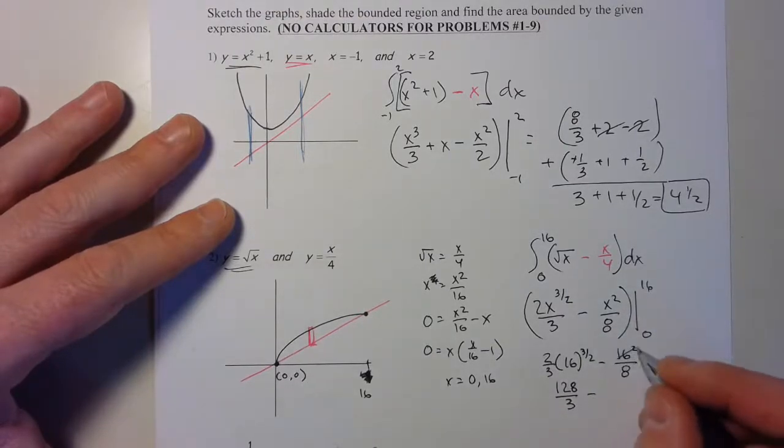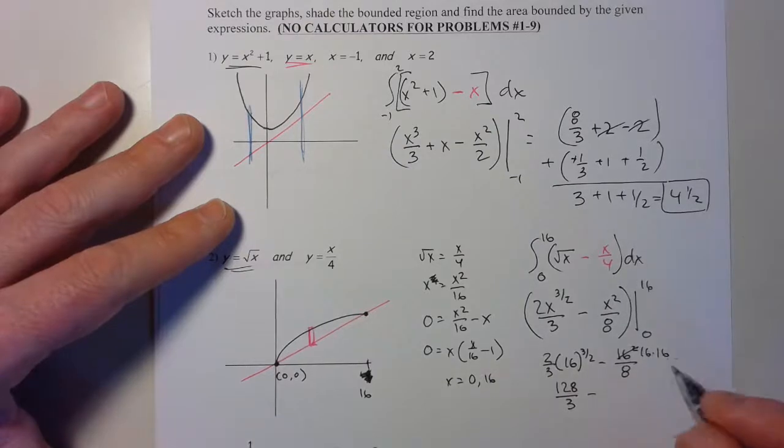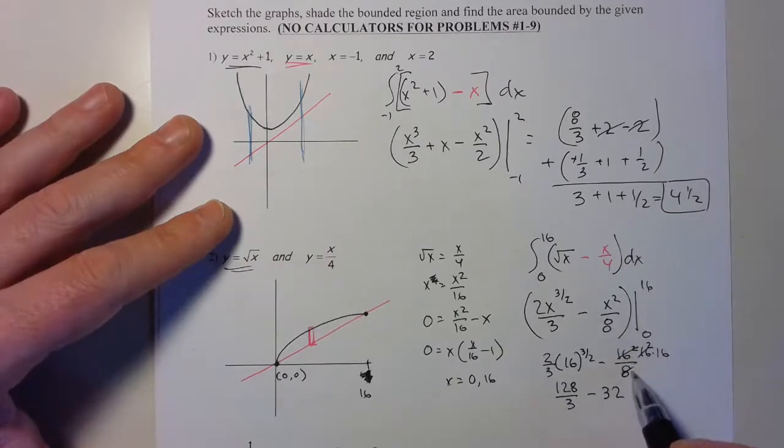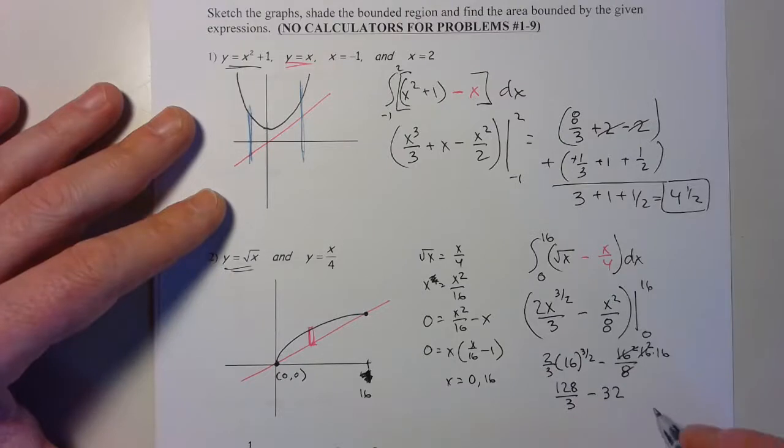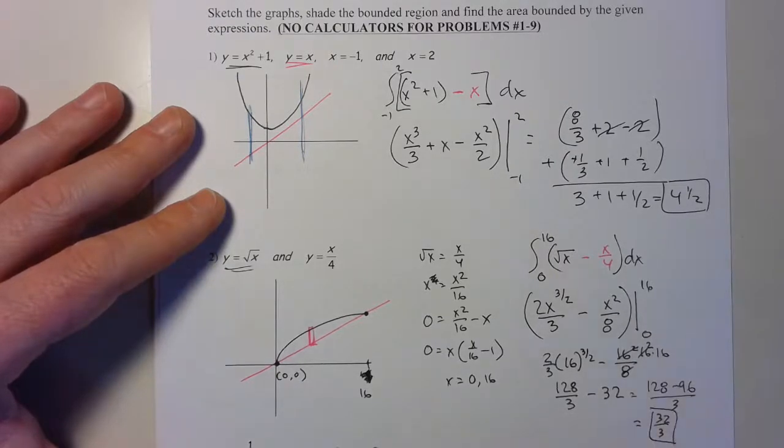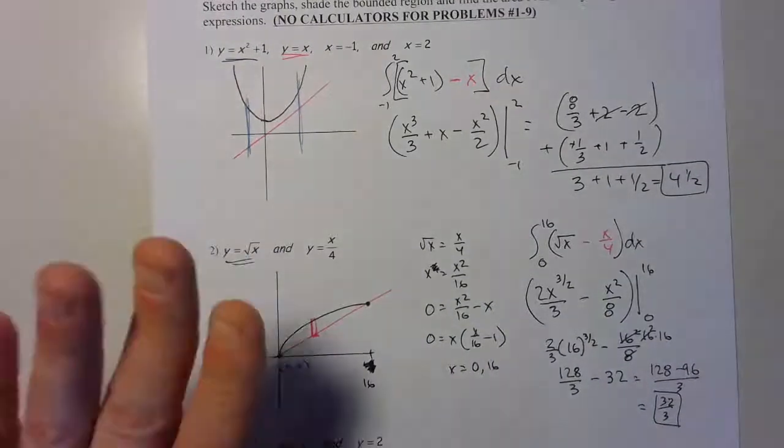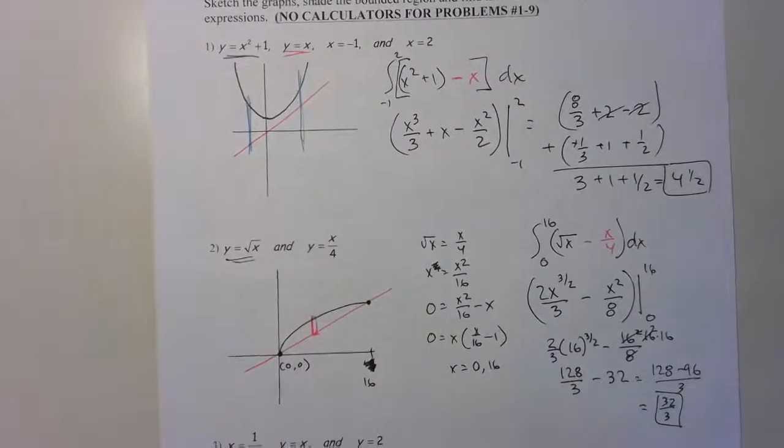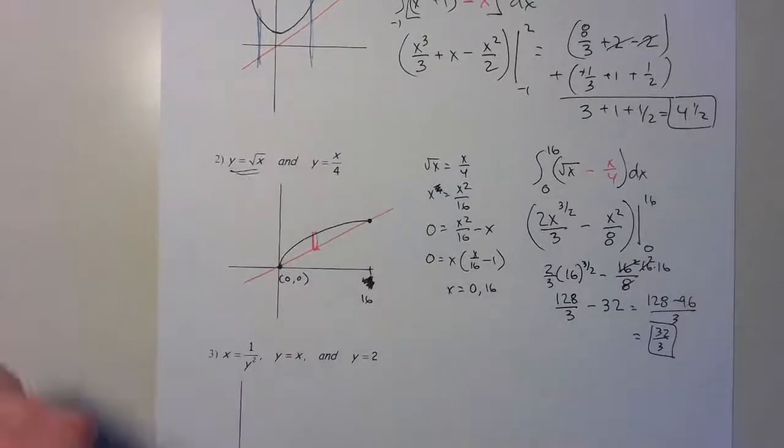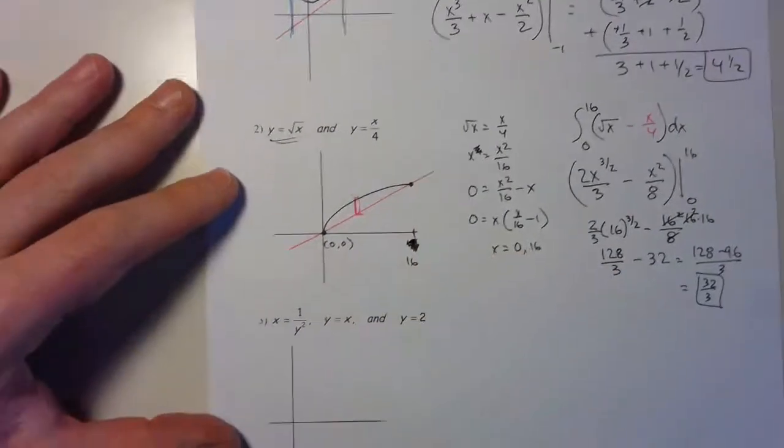I'll plug those in. So I have 2/3 times 16 to the 3/2 minus 16² over 8. The zeros are going to go away nicely. Square root of 16 is 4, so I get 128/3. Then I can reduce that and that gives me minus 32. So I have 128 minus 96 over 3, which gives me 32/3 as my area.